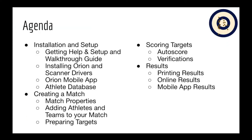We are going to break this up into four different sections. First, the installation and setup of Orion — including where you can get help, installing Orion and the scanner drivers, installing the Orion mobile app, and how to initialize your athlete database. The second section is on creating a match, covering match properties and settings. Next, adding athletes and teams to your match. And finally, preparing targets, which is largely printing barcode labels for the targets about to be shot.